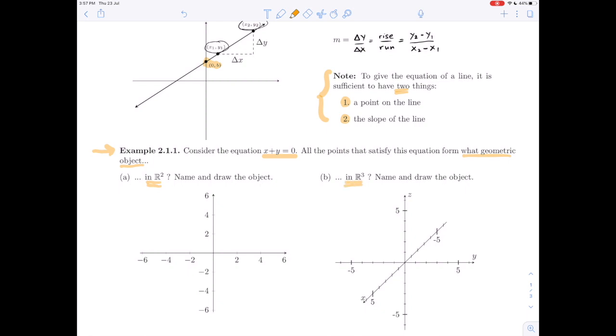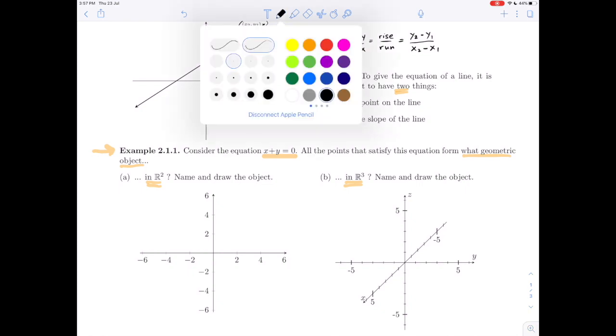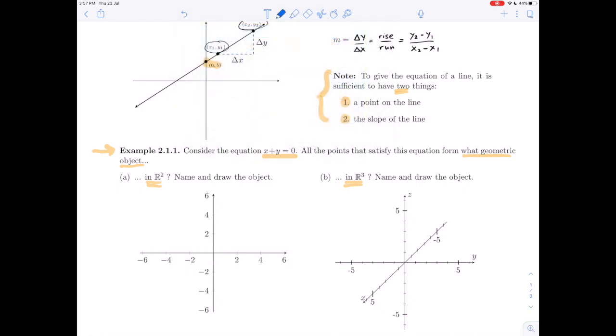We have to name and draw the object in each case. In two-dimensional space, if we have the line x + y = 0, that's given in general form. Let's just write this as y = -x.